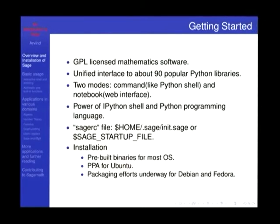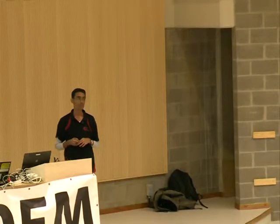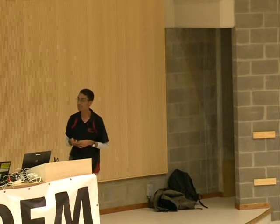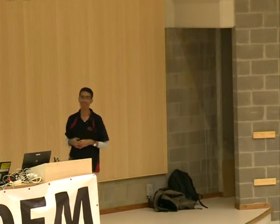Sage is a GPL-licensed mathematics software — a collection of almost 90 Python libraries providing an IPython interface. You can also use the notebook interface by running 'notebook' in the terminal. You get IPython shell features: tab-completion, history, and access to every other Python library. Installing it is easy: just download pre-built binaries from the Sage website. There's also a PPA for Ubuntu, and packaging efforts for Debian and Fedora are underway.